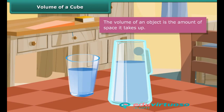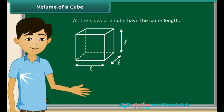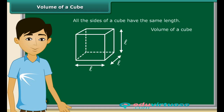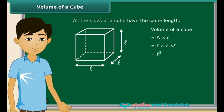The volume of an object is the amount of space it takes up. As we know, all the sides of a cube have the same length. Suppose this cube has length l. To find the volume of the cube, we multiply the area with l. By multiplying these three l's together we get l³. Therefore, the formula for the volume of a cube is V = l³.